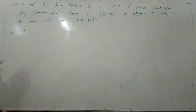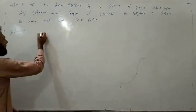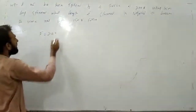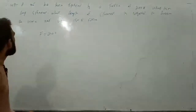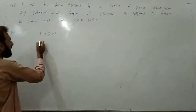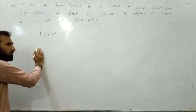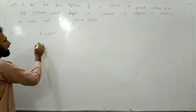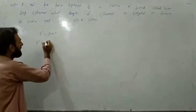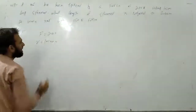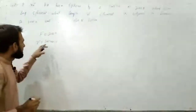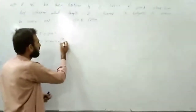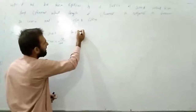A nut has been tightened by a force of 200 Newton. Force applied was 200 Newton to tighten the nut. The spanner length is 10 centimeter, represented by R. 10 centimeter — first let's convert it to meters. To convert centimeter to meter, we divide by 100. 1 meter is equal to 100 centimeter.